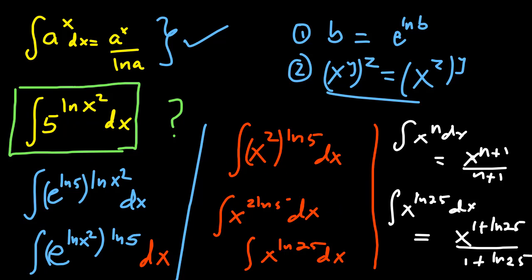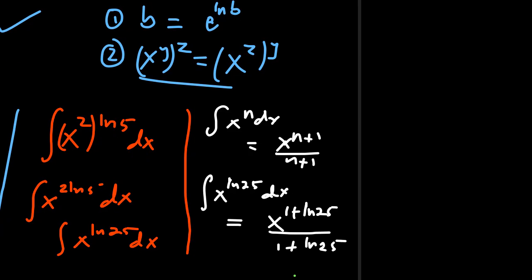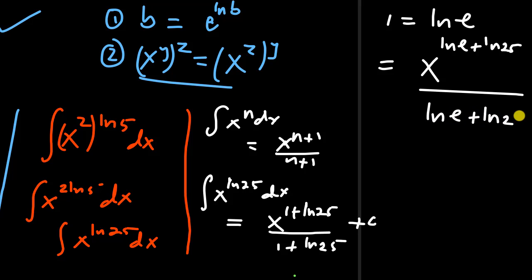So we're almost there. Let me just simplify this solution further, plus a constant. But we know that 1 is the same as the natural log of e. So I'm going to substitute for that there. So I'll write this answer as x to the power natural log of e plus natural log of 25 divided by natural log of e plus natural log of 25.